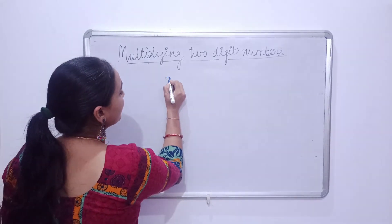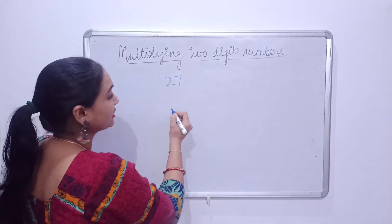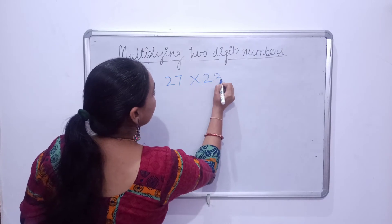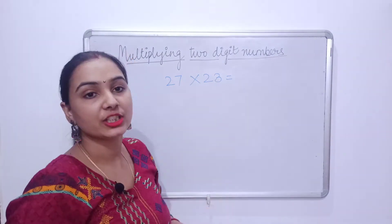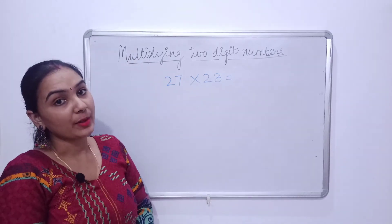Look, here we have two-digit numbers, like 27 into 23. If I tell you to multiply and give me this, then how much time will you take?